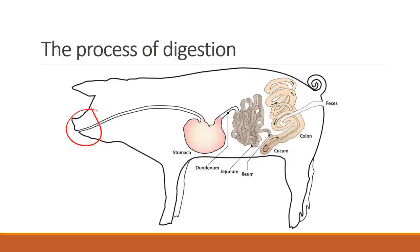The tongue moves the food around the mouth and sends it to the back of the throat where it can be swallowed. For the chemical part, saliva is secreted into the mouth in response to the presence of food. The saliva softens the food, and the enzyme known as salivary amylase begins the chemical breakdown of starch into a sugar called maltose.